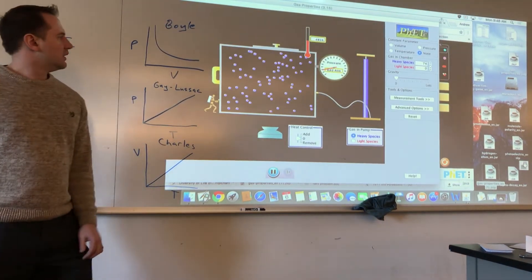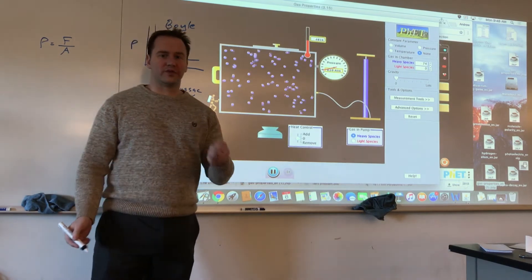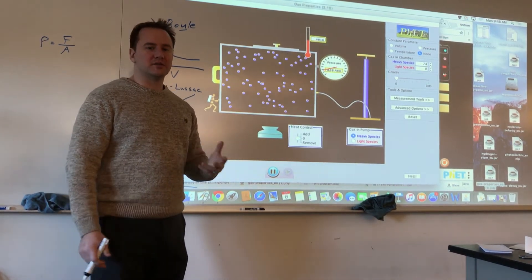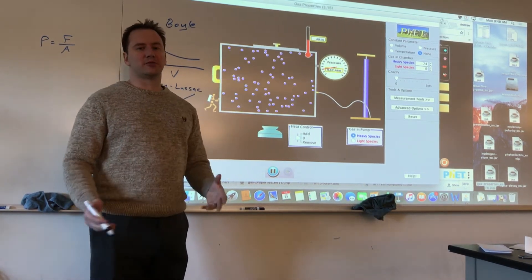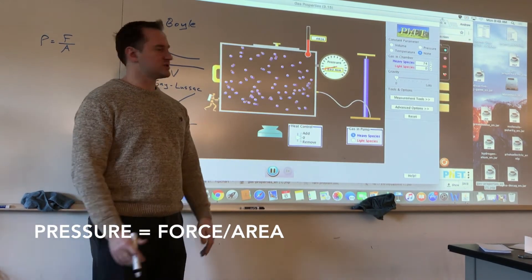So here we have a gas sample and you can see that when you're looking at the walls of the container the particles are colliding with it. The force that these particles are exerting on the walls of the container divided by the area over which they're applied is defined as the pressure. So pressure is force of collision divided by the area over which it's applied.